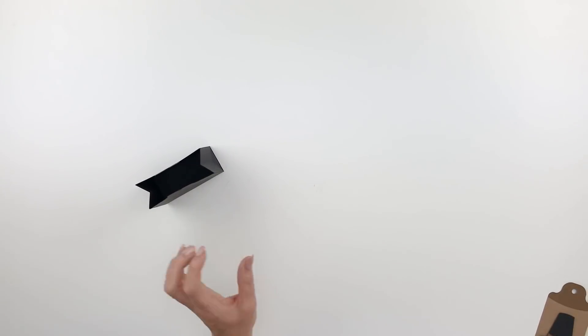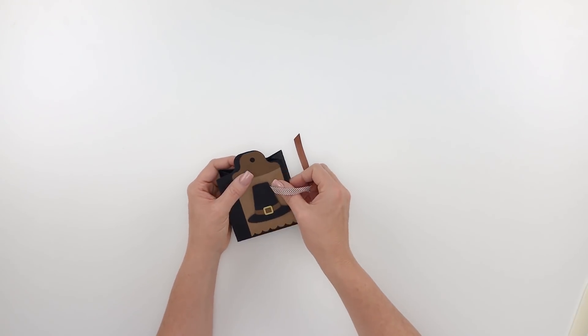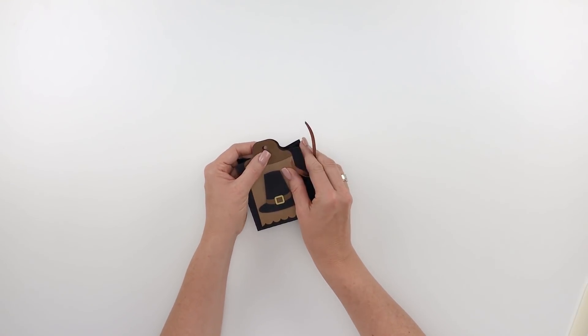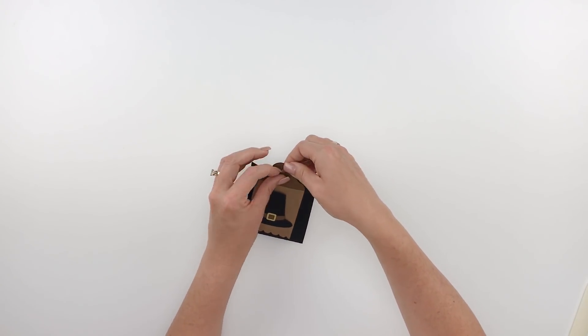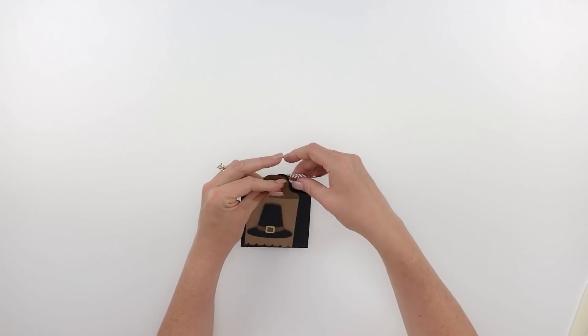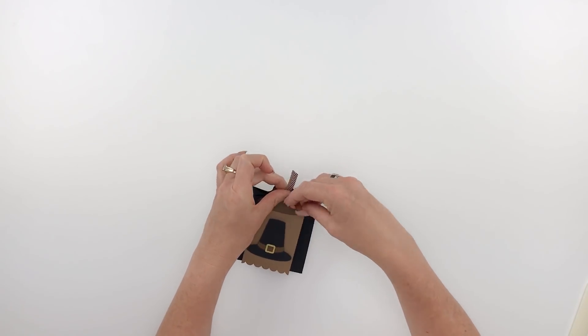So let's go ahead and attach this onto the bag. What I like to do is just line that up with the little top there and feed a ribbon through, or you can use baker's twine or whatever you'd like to tie off your project with.